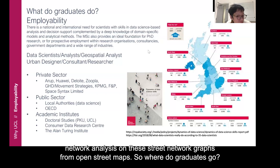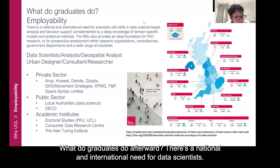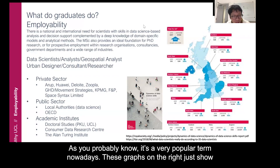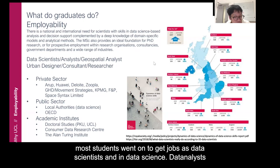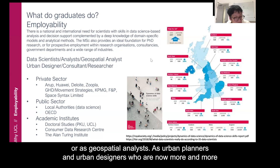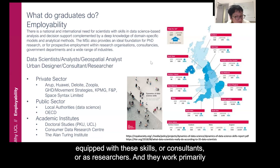So where do graduates go? What do graduates do afterwards? There's a national and international need for data scientists, which is a very popular term nowadays, and with more data, this demand is only going to increase. Primarily, most students went on to get jobs as data scientists, data analysts, or as geospatial analysts, as urban planners and urban designers who are now more and more equipped with these skills, or as researchers. They work primarily in private sectors such as Uber, Huawei, Deloitte, or Zoopla, which are real estate, IT, and transport planning companies.